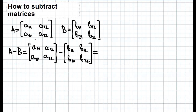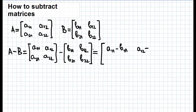Matrix subtraction is done in the same way as matrix addition, but now it is necessary to subtract each element of matrix B from its corresponding element of matrix A. To subtract matrix B from matrix A, we write A11 minus B11, A12 minus B12, A21 minus B21, and A22 minus B22. And that's all.